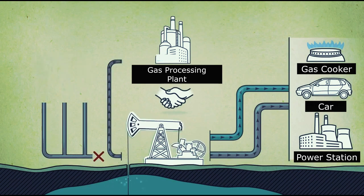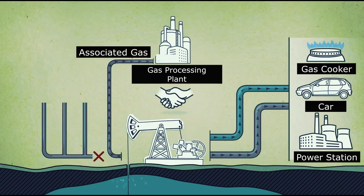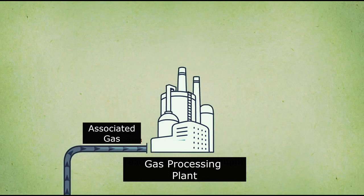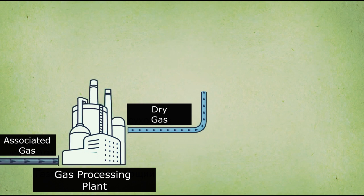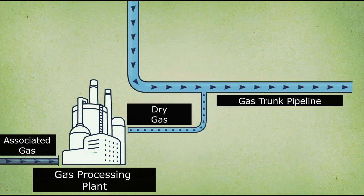When the associated gas is separated from crude oil, it is sent to a gas processing plant. There, this raw material is divided into two basic components. The first is dry gas — the same as natural gas, but extremely purified from petrochemical components — which is then transported through gas trunk pipelines.